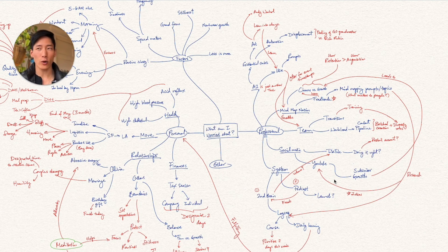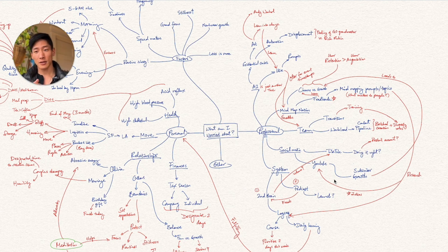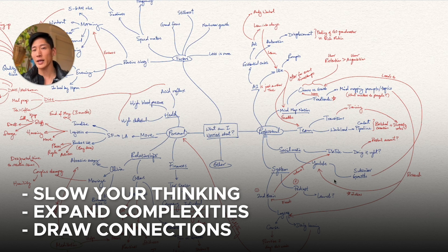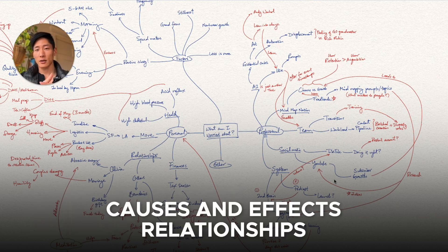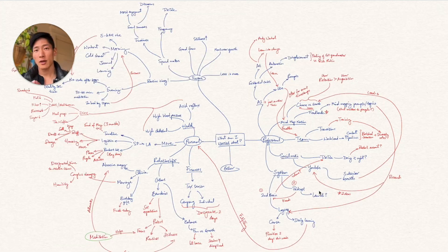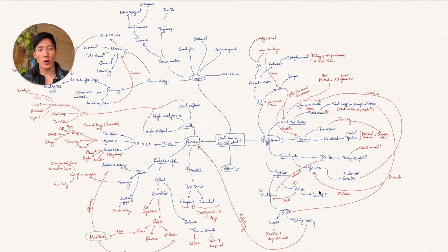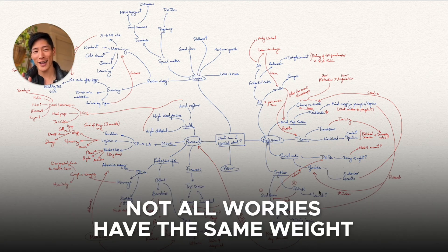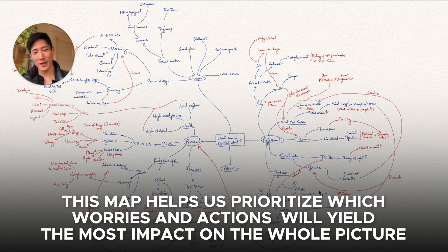You also notice that I got a bunch of arrows going to and from all these different nodes. And it's because I'm trying to understand how these things are connected. The biggest problem with addressing worries is that sometimes everything just seems to be one big bundle of mess. So by slowing things down, expanding out the complexities, and then drawing the connections between them, we start understanding some causes and effects relationships, but also seeing if there are any feedback loops.